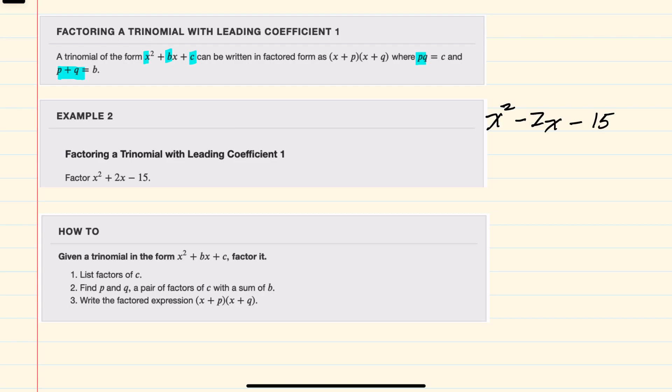We have this example: x² - 2x - 15. The how-to steps have us first listing the factors of c.